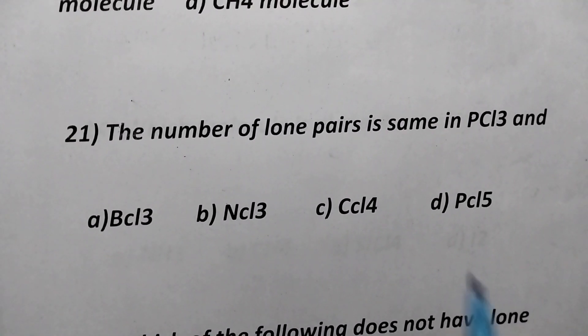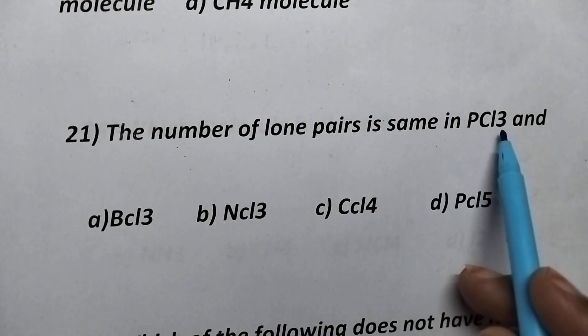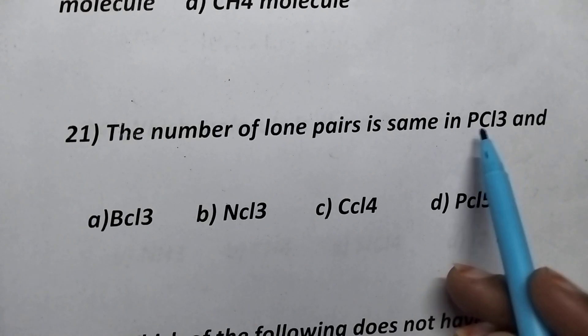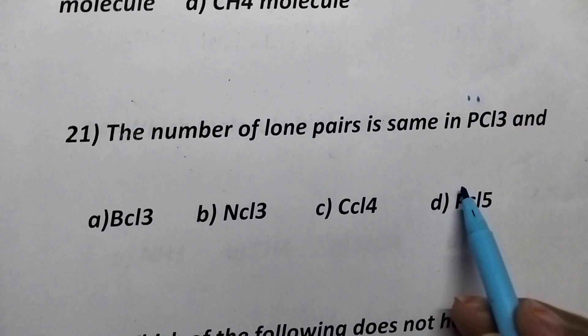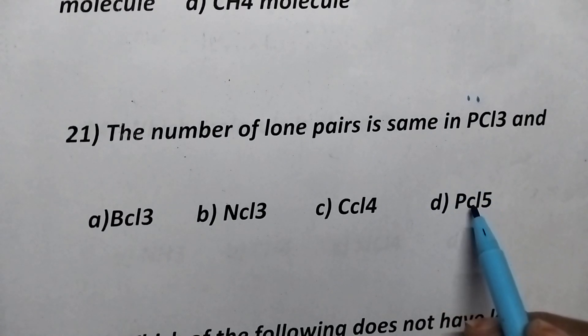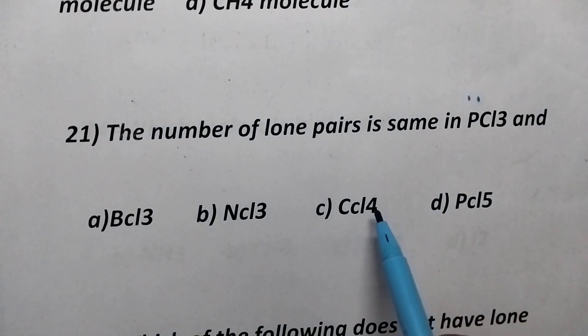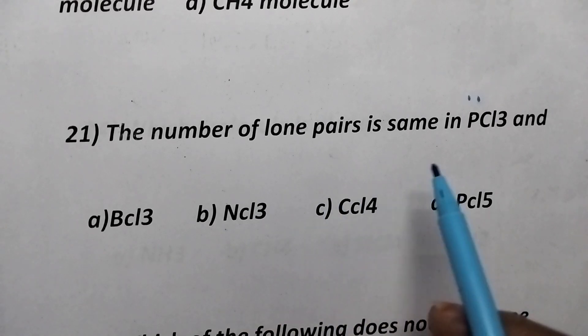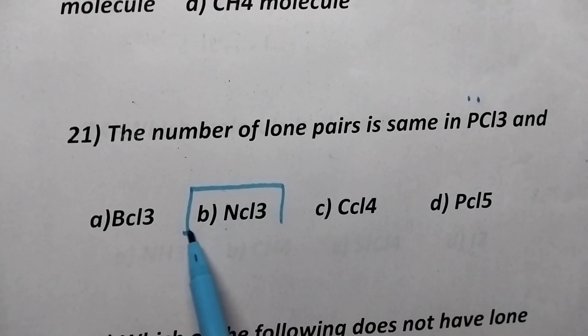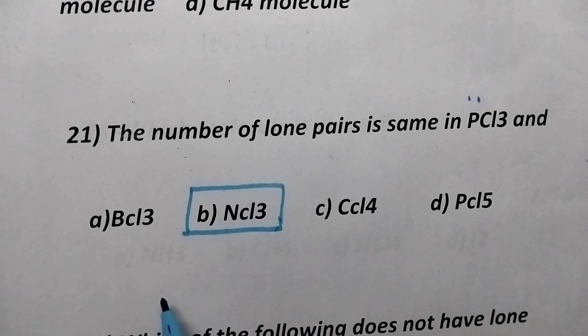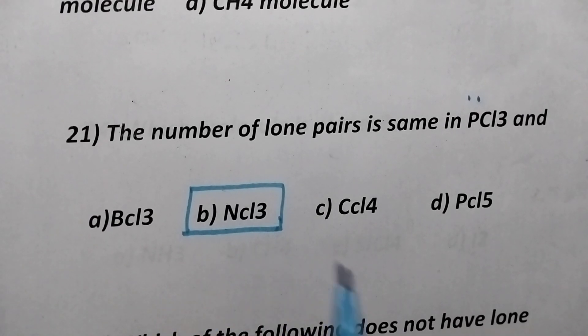The number of lone pairs is same in PCl3 and. So, phosphorus contains one lone pair of electron and coming to the PCl5, already lone pair of electrons are used in the bond formation. So, here nitrogen belongs to the same group and hence option B, nitrogen trichloride contains the same number of lone pairs as PCl3.